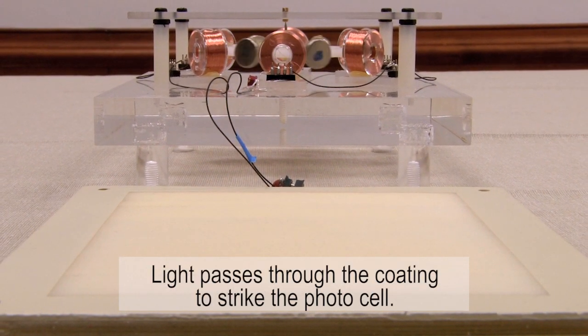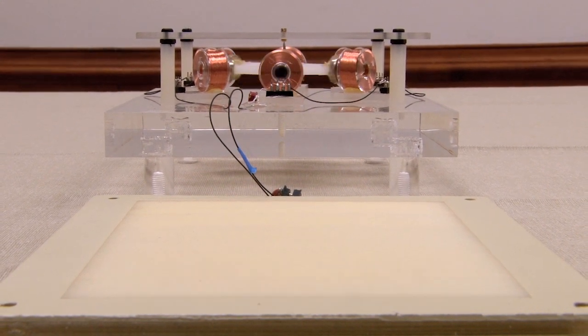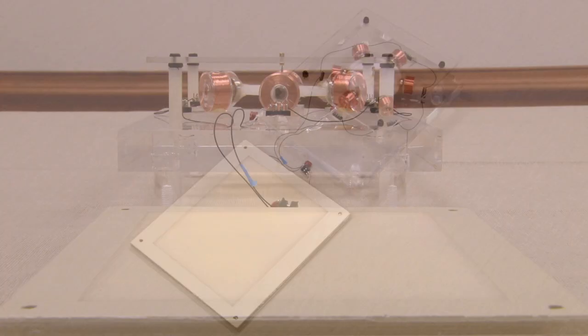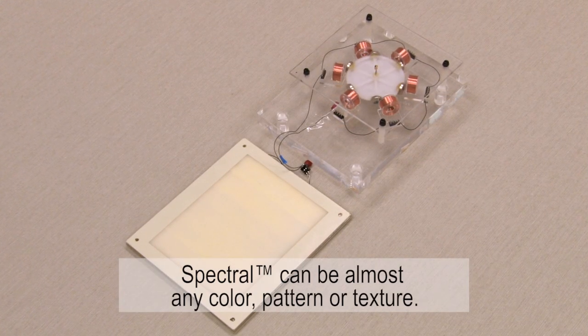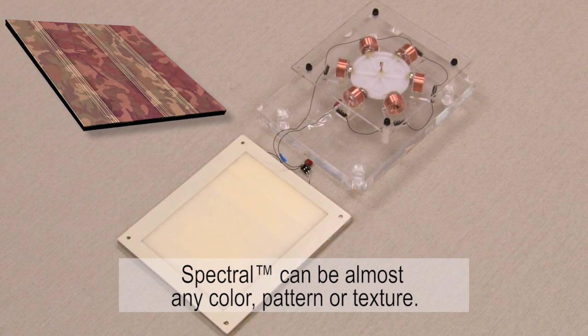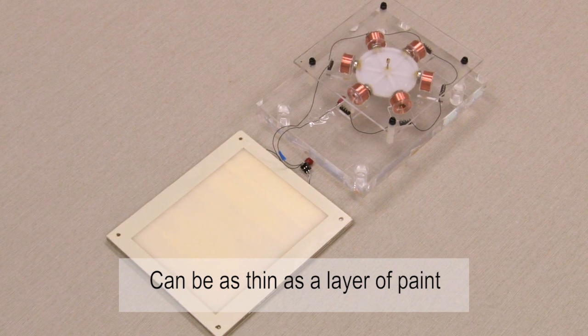This panel was designed to look like the plastic in a smoke alarm or on the back of a smartphone. But Spectral surfaces can be almost any color, pattern, or texture, and both the coating and the photocell can be as thin as a layer of paint.